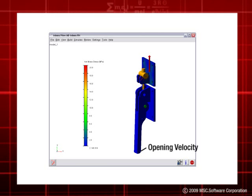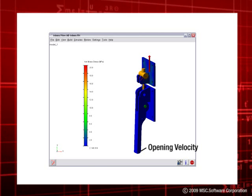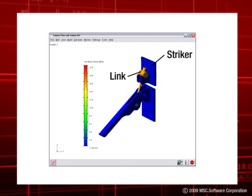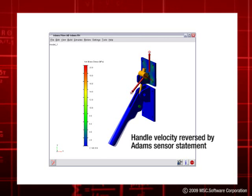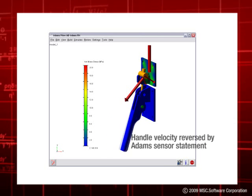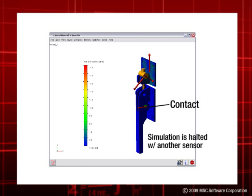The input to the force controller is an opening velocity. Once the latch is released and the link separates from the striker by a set amount, the desired handle velocity is reversed by an Adams sensor statement and a simulation script. Once the handle contacts the base plate, the simulation is halted with another sensor.